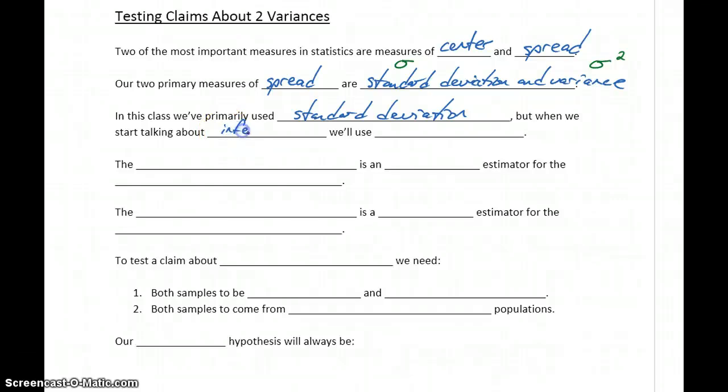But once we start talking about statistical inference, we'll start using variance as the measure of spread that we want to consider.